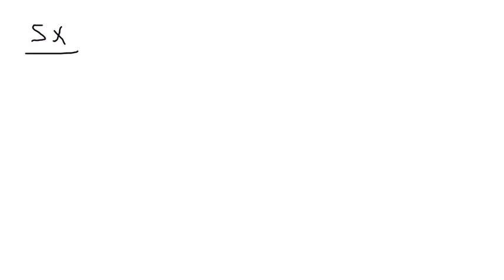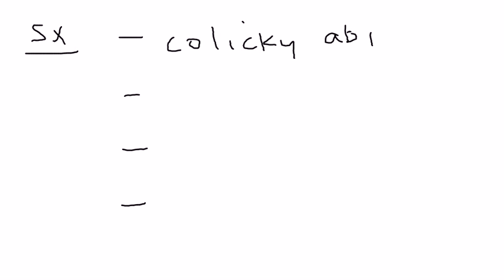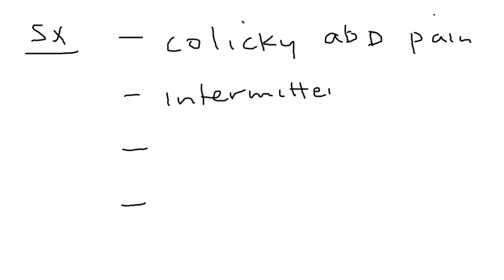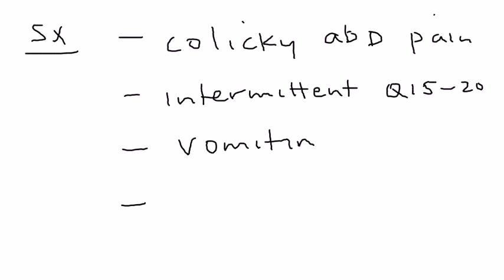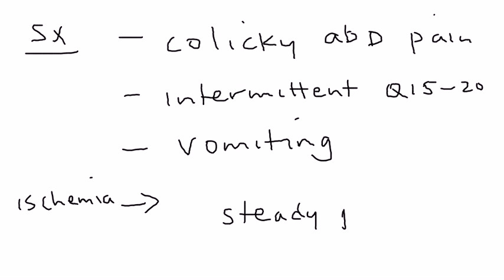So let's talk about the basic symptoms. How does a child present with intussusception? It's actually a very distinct pattern of colicky abdominal pain. It's initially intermittent — so maybe every 15 to 20 minutes the child will have this pain, and there will also be vomiting involved. Eventually, if there is ischemia and the blood supply is cut off, that ischemia will lead to steady abdominal pain, which is a later sign.